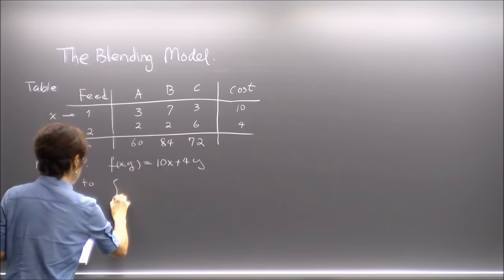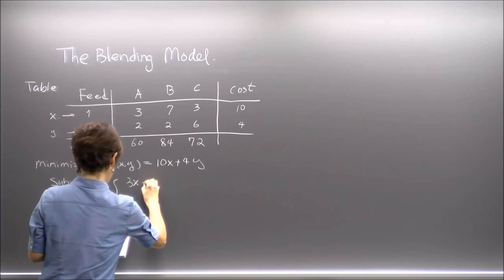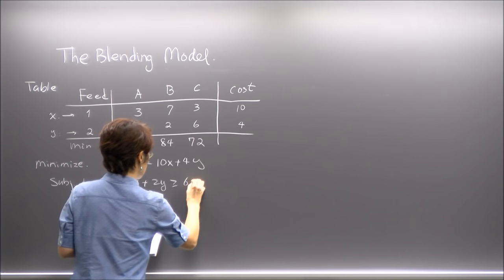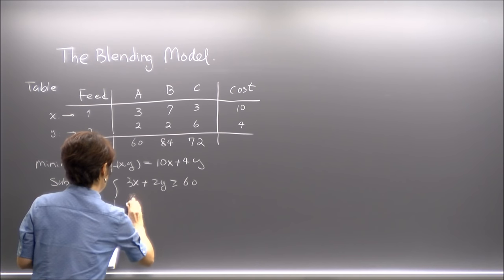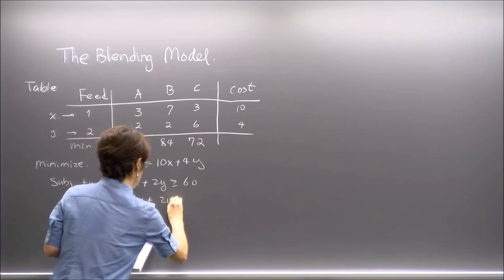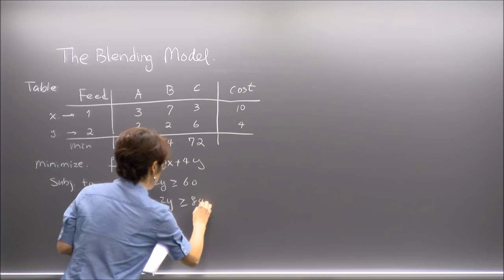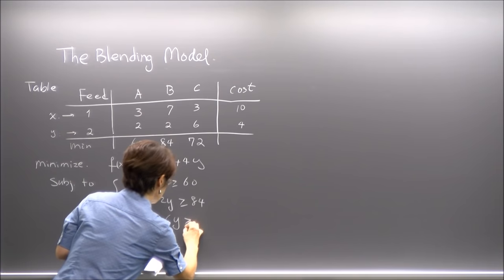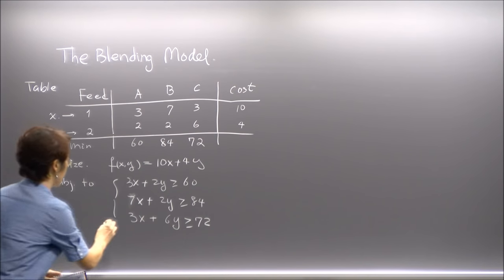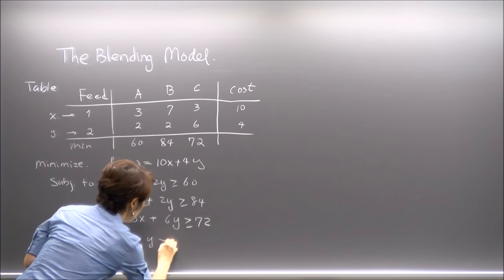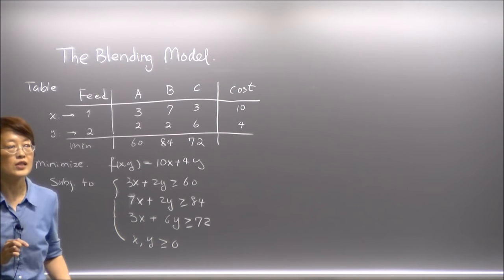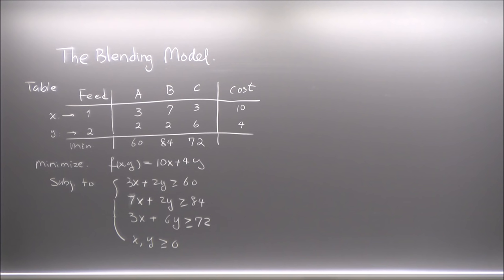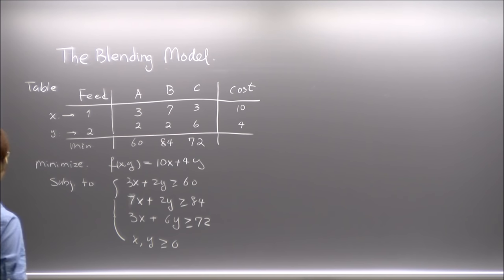The cost function is f(x,y) = 10x + 4y, subject to three constraints coming from each column: 3x + 2y ≥ 60, 7x + 2y ≥ 84, and 3x + 6y ≥ 72.